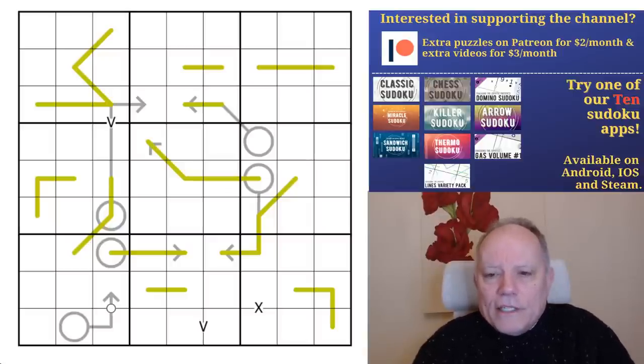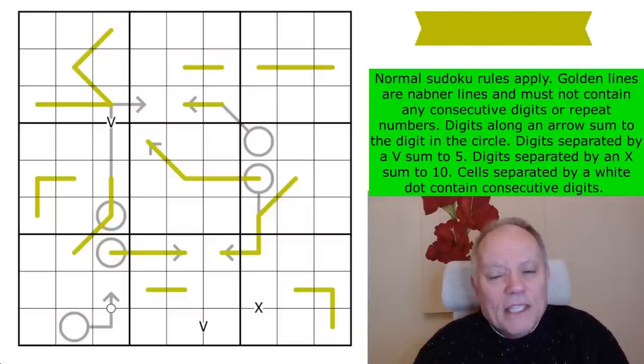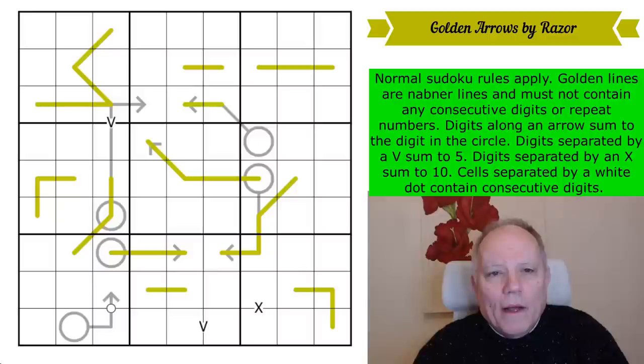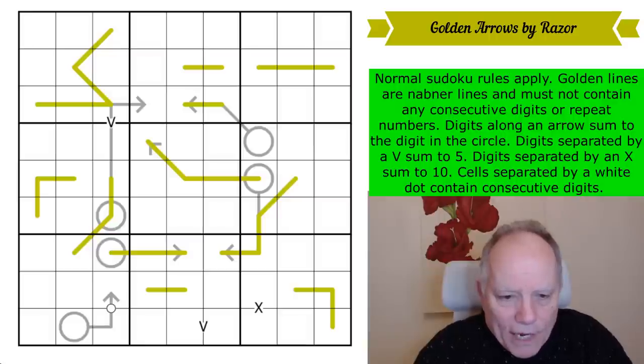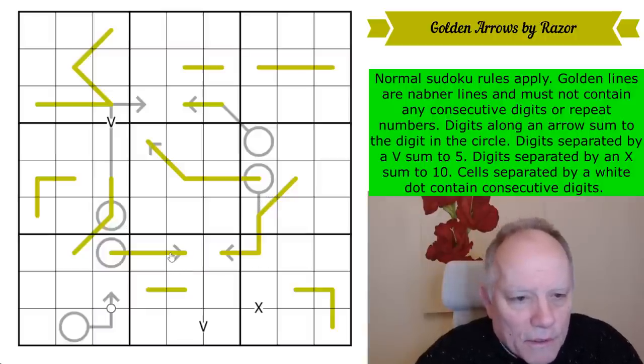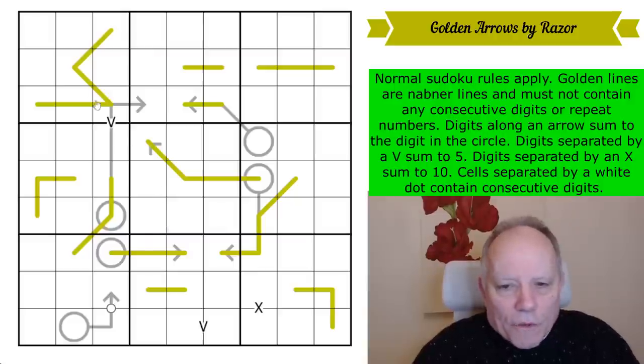Now let's look at today's puzzle, which is a debut that was sent to us actually a while ago by Razor. It's called Golden Arrows. Not sure how clear this is - I will tell you in the rules that there are arrows everywhere that you can deduce.